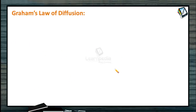Before understanding the law, let me first remind you about the definition of diffusion. Let me give you an example. Suppose one of your family members is spraying a perfume on his clothes and you are feeling the smell of that perfume even though you are at the other end of the room. Why is that so? Because the molecules of the perfume are travelling through the air and reaching you.